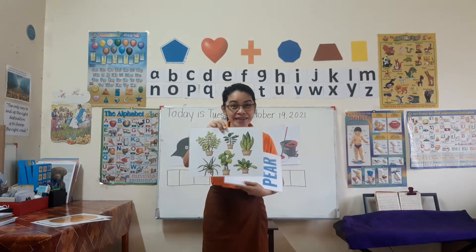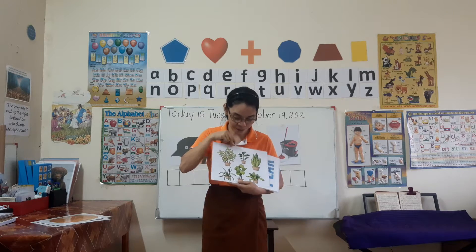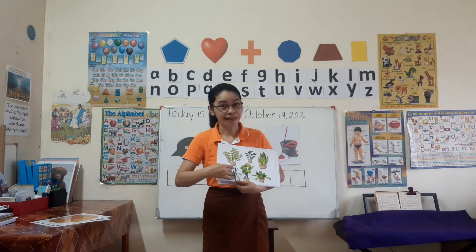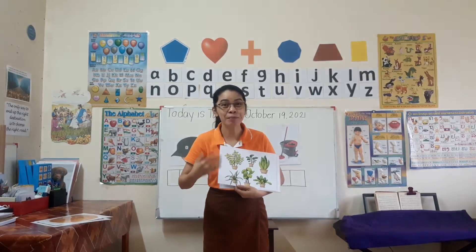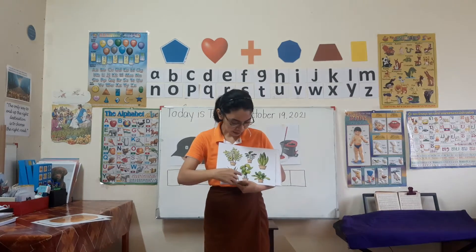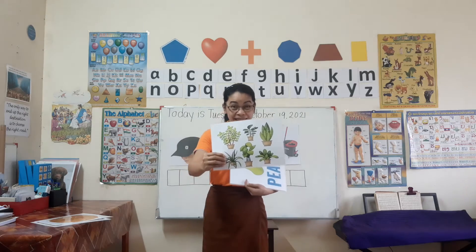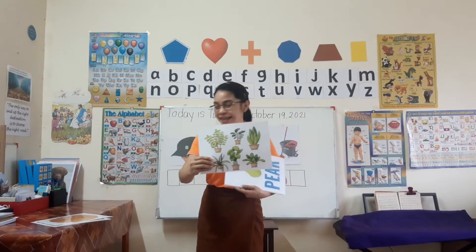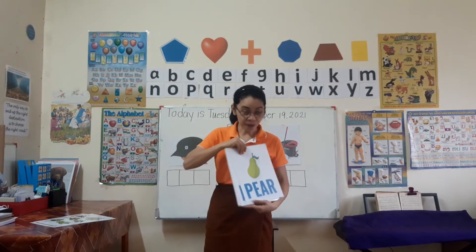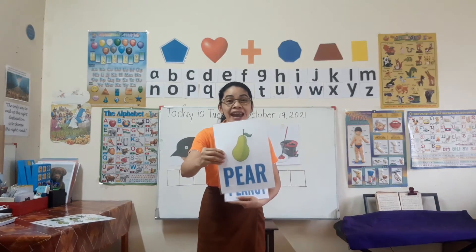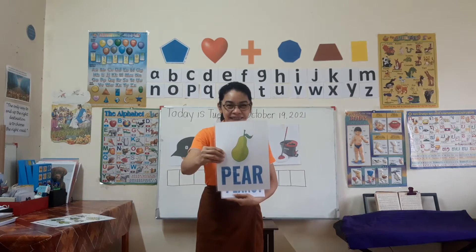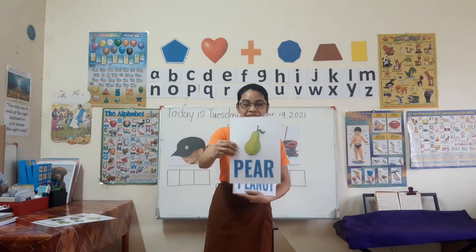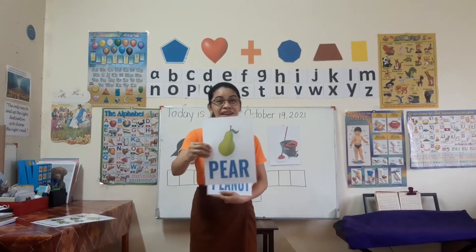Do you have plants in your house? Okay, so whenever you see this kind of little plant, you can say: plant. Put it in that pot. So, plant. And this one is called pear. Pear. Is this going to be eaten? Yes. You can find a lot of pear in the market.